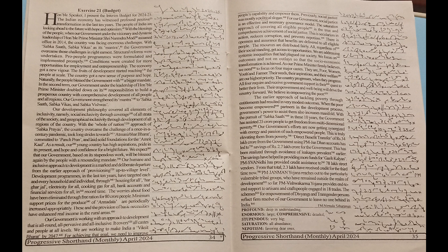We believe in empowering the poor. However, the earlier approach of tackling poverty through entitlement had resulted in very modest outcomes. When the poor become empowered partners in the development process, government's power to assist them also increases manifold. With the pursuit of Sabka Saath in these ten years, the government has assisted 25 crore people to get freedom from multidimensional poverty.